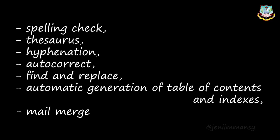OpenOffice Writer is a word processor with additional features: spell check automatically checks spelling and suggests corrections; thesaurus provides synonyms for a word; hyphenation provides automatic hyphen generation; auto correct automatically corrects spelling when you press space; find and replace is available; and automatic generation of table of contents and text index for long documents.